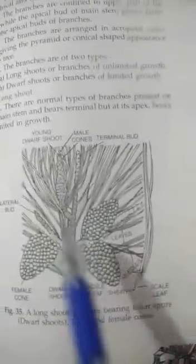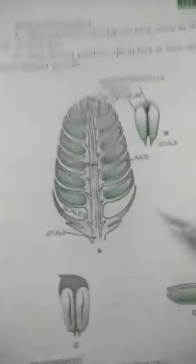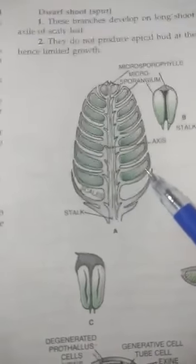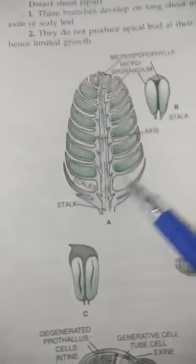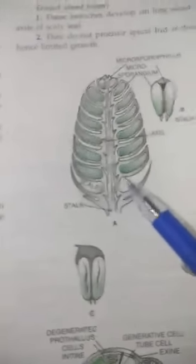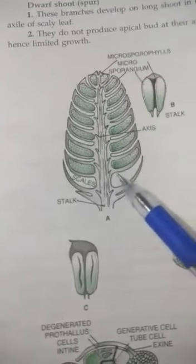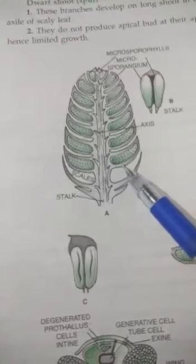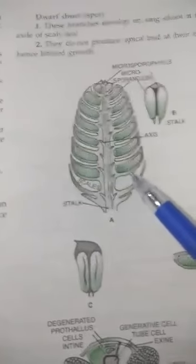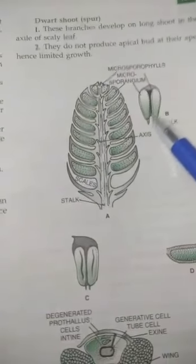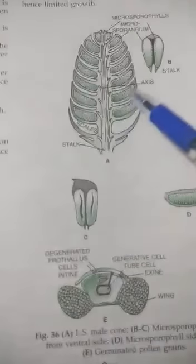Now how does reproduction take place — how does the life cycle operate? We will take the male cone first. This is the longitudinal section of the male cone. In this male cone, microsporangia are formed in this way. This is called microsporophyll — this leaf-like structure. This is called microsporangium, and this leaf is the microsporophyll.